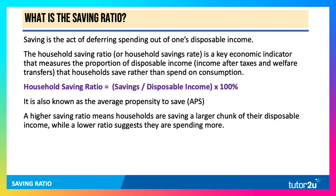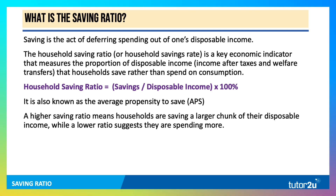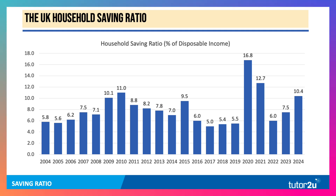A higher savings ratio means that people are choosing to save a larger chunk of their disposable income, while a fall in the ratio suggests they're spending more. Here's the data, with the most recent figures included up to the end of 2024. You can see that the savings ratio varies quite a lot on average from year to year.